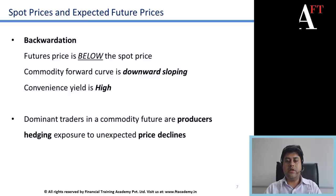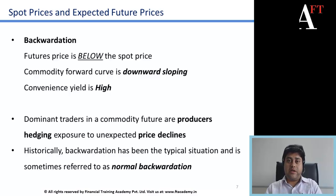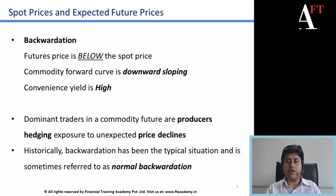Producers enter into hedging contracts for unexpected price declines. Historically, backwardation has been a typical situation and is sometimes referred to as normal backwardation. These two topics — contango and backwardation — are very important from a fundamental point of view, and you can expect exam questions on them, so please pay close attention and practice on them.